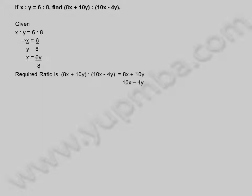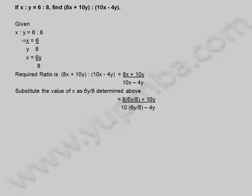The required ratio is 8x plus 10y is to 10x minus 4y, which equals 8x plus 10y divided by 10x minus 4y. Substituting x equals 6y by 8: 8 into 6y by 8 plus 10y divided by 10 into 6y by 8 minus 4y, equals 6y plus 10y divided by 15y by 2 minus 4y, equals 16y divided by negative y by 2, which is equal to minus 32 by 1.